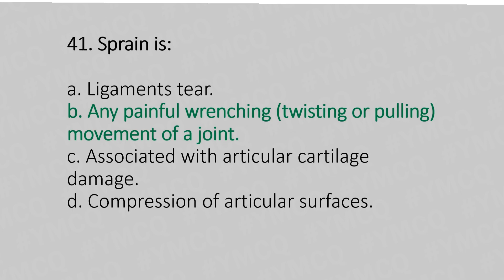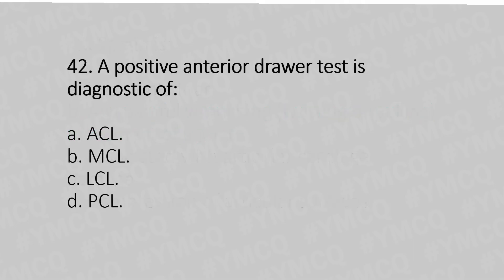The answer is option B: any painful twisting movement of the joint. Now let's move to question number 42. A positive anterior drawer stress test is diagnostic of: option A, ACL; option B, MCL; option C, LCL; option D, PCL. And the answer is option A, ACL.